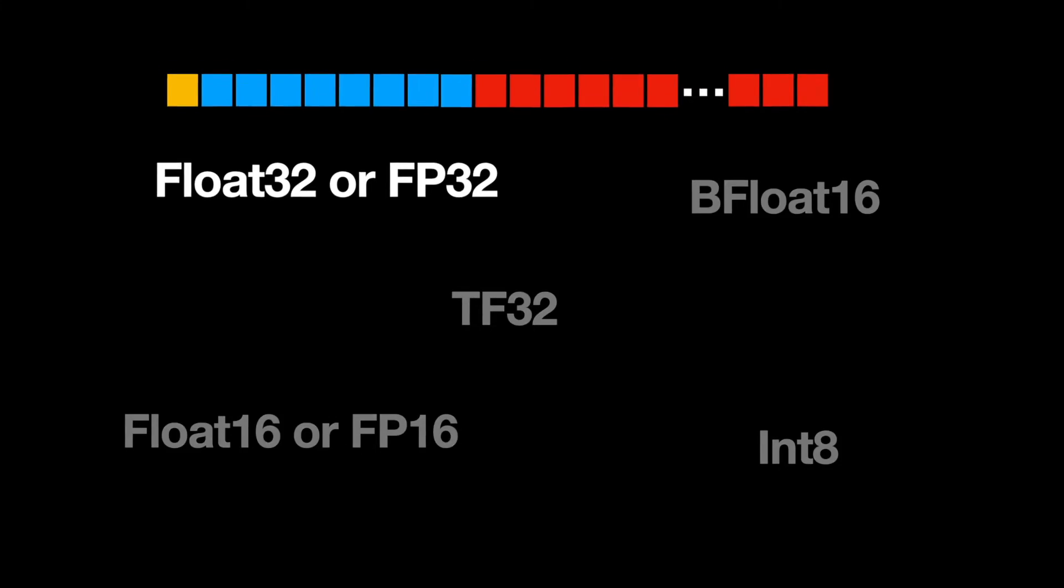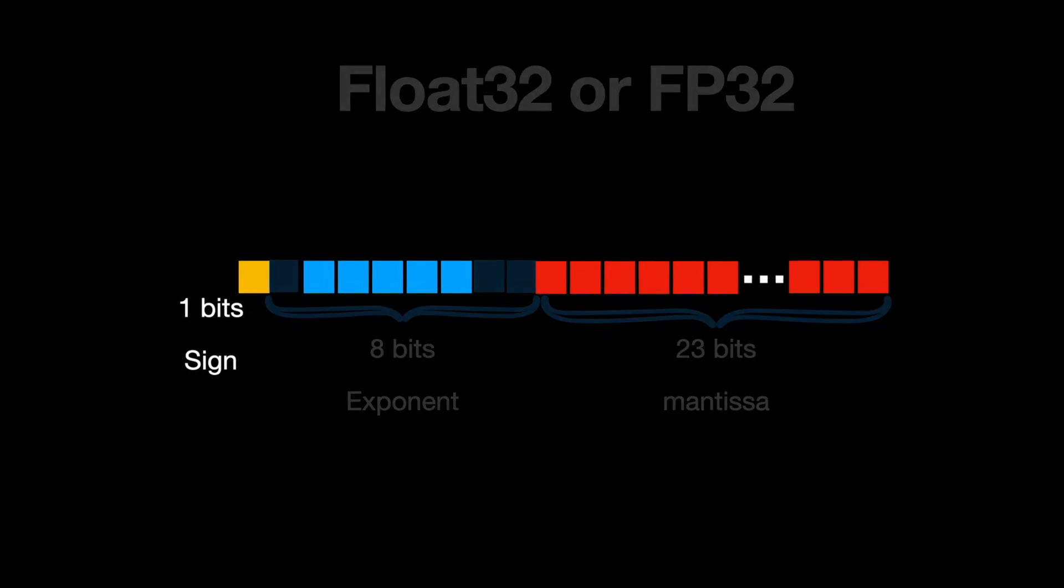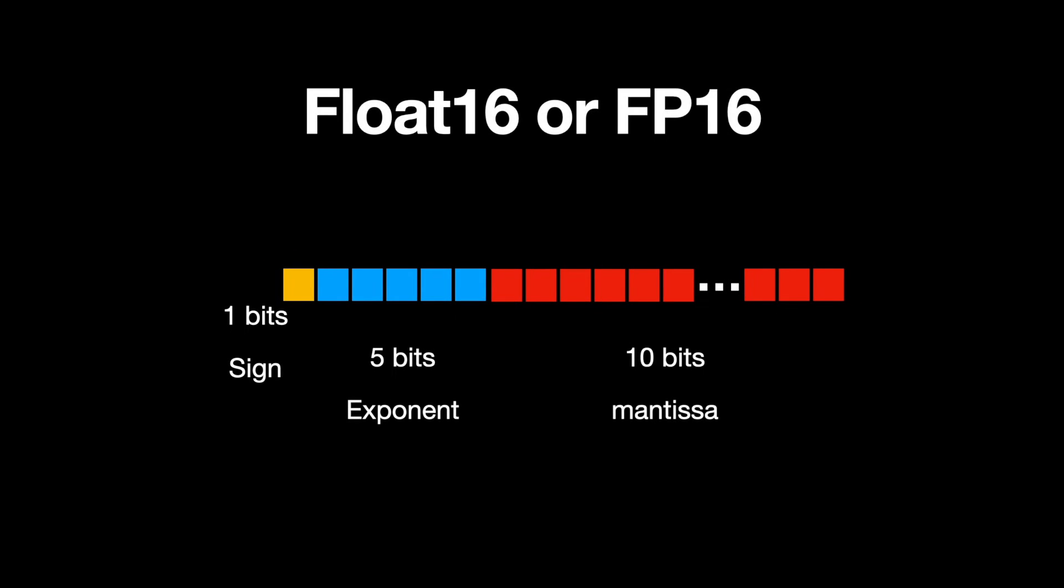Each of these formats consume different chunks of memory. For example, float32 allocates 1 bit for sign, 8 bits for exponent, and 23 bits for mantissa. Similarly, float16 or fp16 allocates 1 bit for sign, but just 5 bits for the exponent, and 10 bits for mantissa.